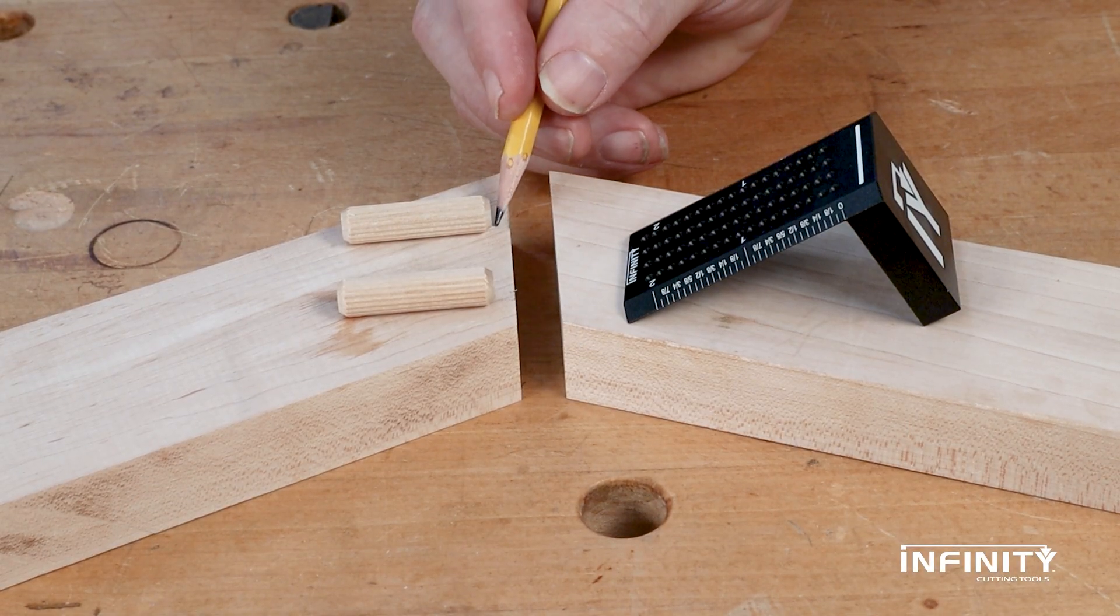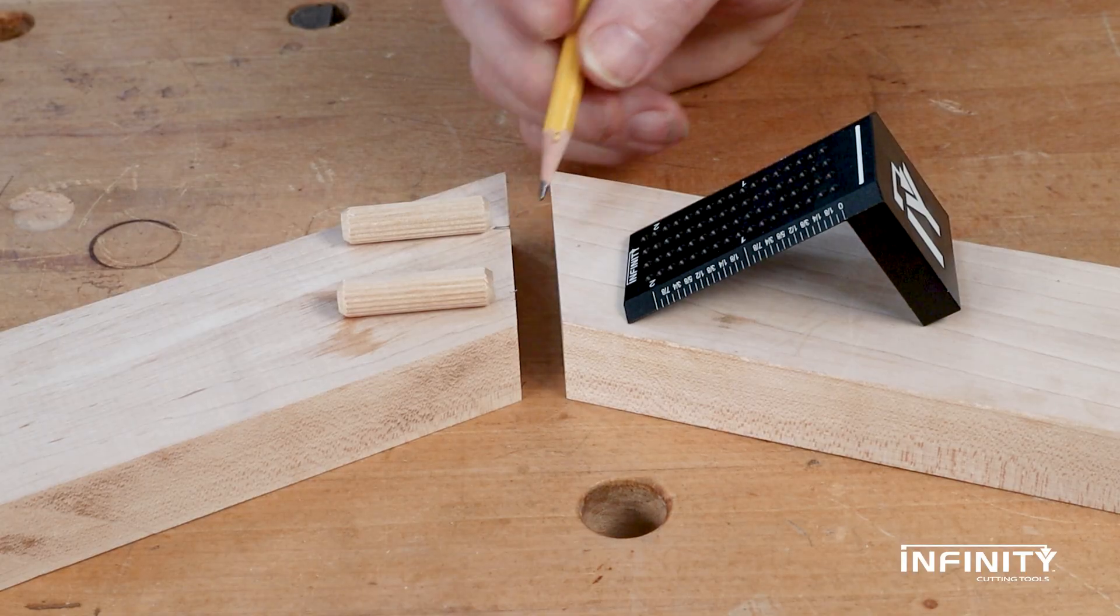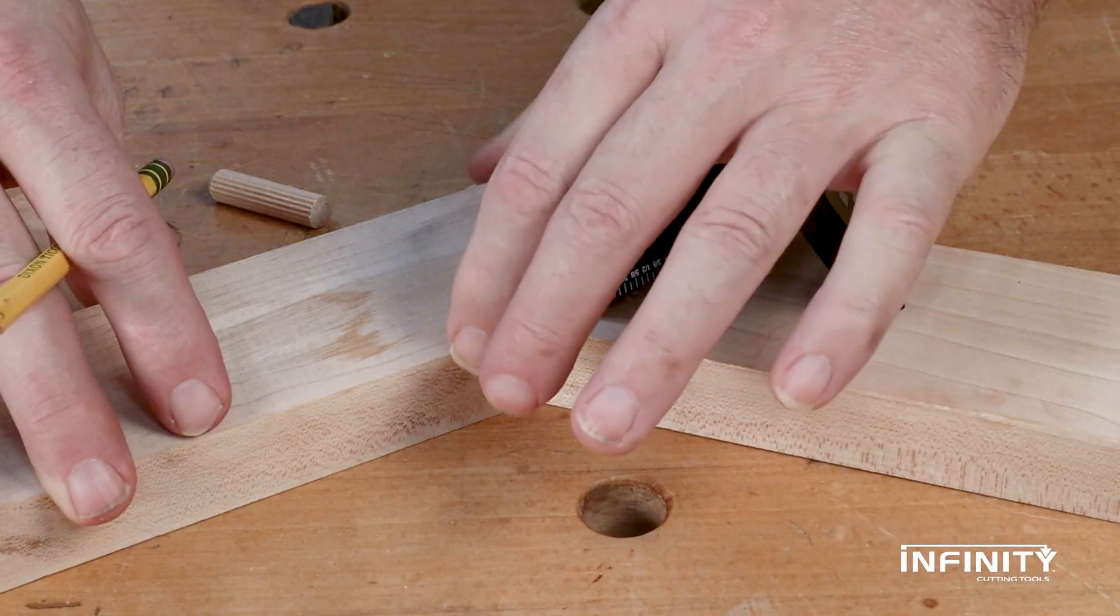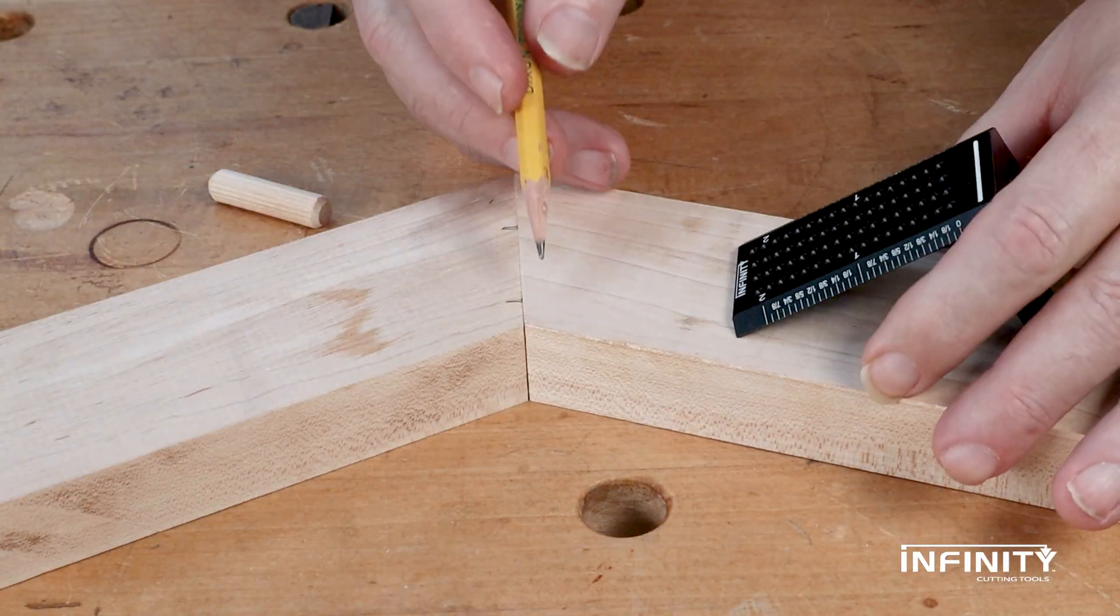Start by laying out the location where you want the dowels to be and mark a center line for where they'll land. Put your mating boards together and transfer those lines across your intended joint.